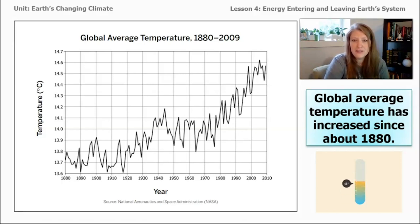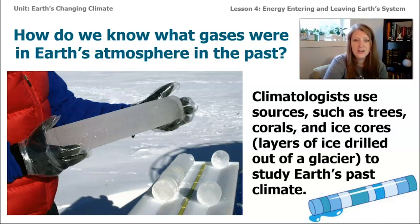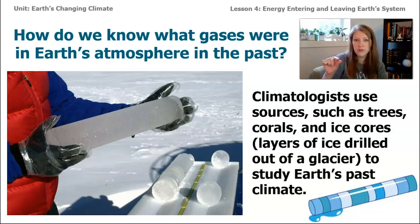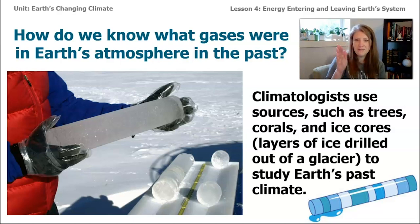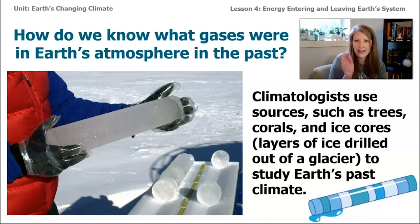Let me introduce you to some of the ways that climatologists study Earth's atmosphere in the past, because you might wonder: how do we know what the atmosphere was like on our planet 100 years ago? We didn't have the same technology. Climatologists use sources such as trees — you can drill a little hole in a tree, pull out a core of wood, and look at the different rings. You can do the same thing with glaciers. You can see cores of ice with layers, and each layer contains bubbles of the air when that layer was formed. It's pretty cool.